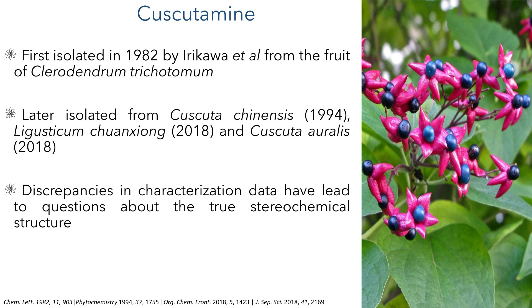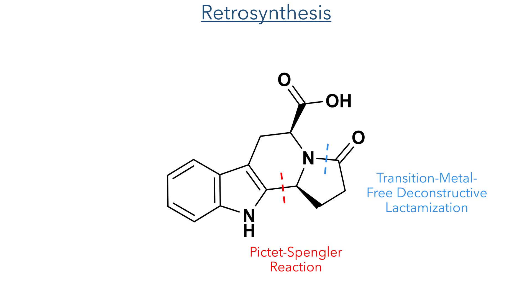However, there are discrepancies in the characterisation data and optical rotations for the compounds isolated, and this has led to uncertainty about the true stereochemical structure of Cuscutamine. Cuscutamine is quite a simple molecule and there have been many effective strategies developed for the synthesis of these indole-type alkaloids. However, this synthetic route is quite interesting as it utilises a transition metal-free deconstructive lactamisation to construct one of the rings present in the molecule.